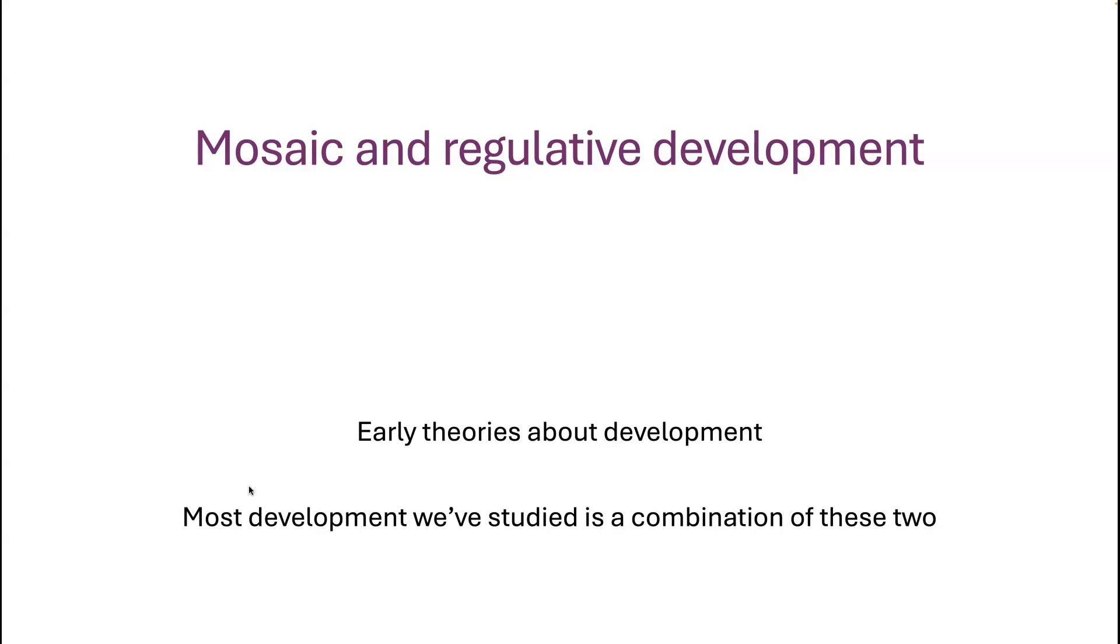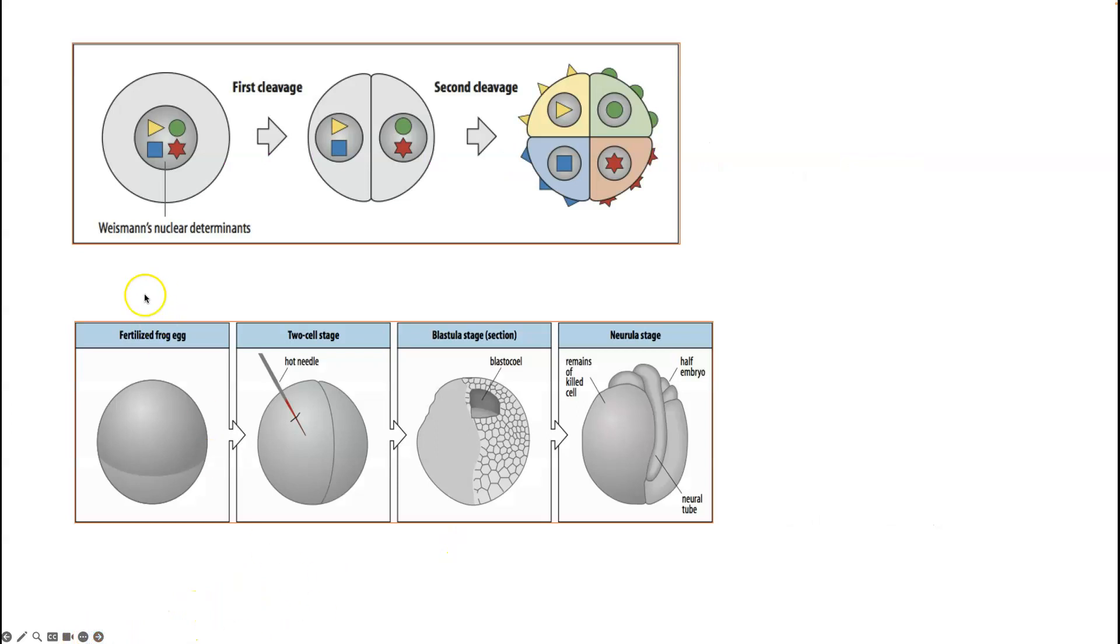As it turns out, almost all the development that we study is a combination of these two. You can see aspects of it that look like mosaic development and some aspects that look more like regulation. Neither one of them is correct or incorrect; it's just that each model was based on some limited data.